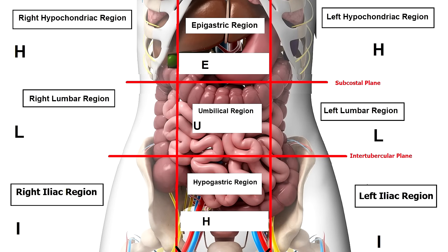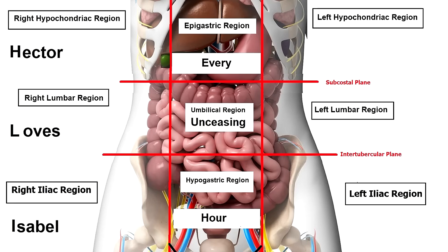If you need a quick memory trick to keep these regions straight, remember that for either of the side columns, we have hypochondriac, then lumbar, then iliac — so we have H, L, and I. In the middle region, we have epigastric, umbilical, and hypogastric — so we have E, U, and H. Just remember this sentence: 'Hector loves Isabel every unceasing hour.' I love a good love story.